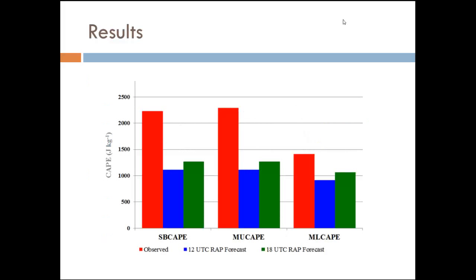Looking at it graphically, you can start to flesh out the magnitude of errors we're seeing. The red is the observed, the blue is the 12Z forecast valid at 0Z, and the green is the 18Z forecast valid also at 0Z. You can see that the observed was much higher in these cases. Usually the forecast got a little better as you got to the 18Z run, but it's still pretty far off. These are the types of errors we were looking at during the convective season last year.